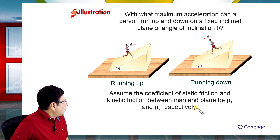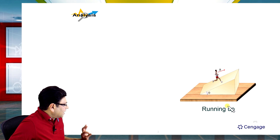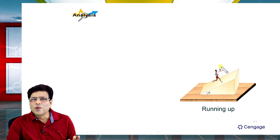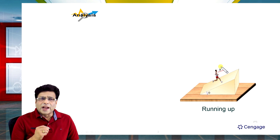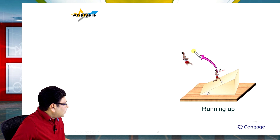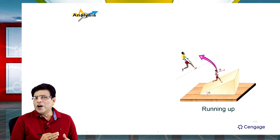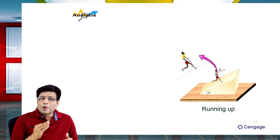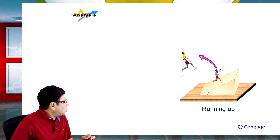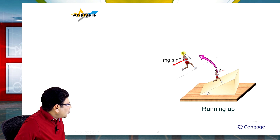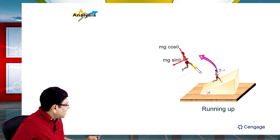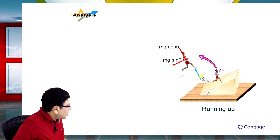First, we will analyze the case when he is running up. Let us make the free body diagram. We can draw the weight components: parallel to the inclined plane in the downward direction, mg sin θ, and perpendicular to the inclined plane, mg cos θ. There will also be the normal reaction offered by the inclined plane on the foot, that is N.